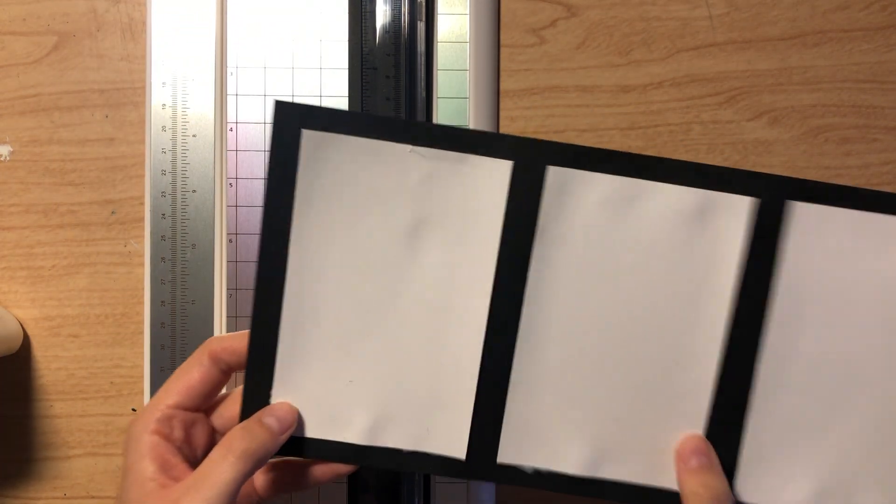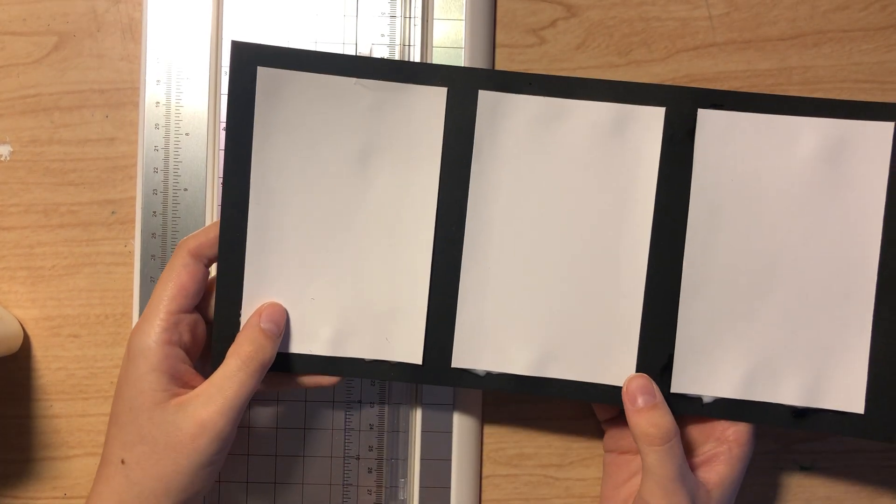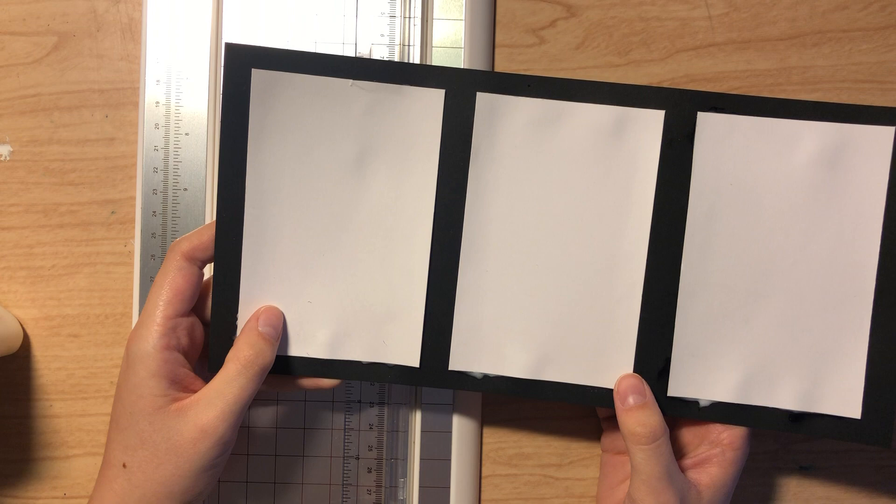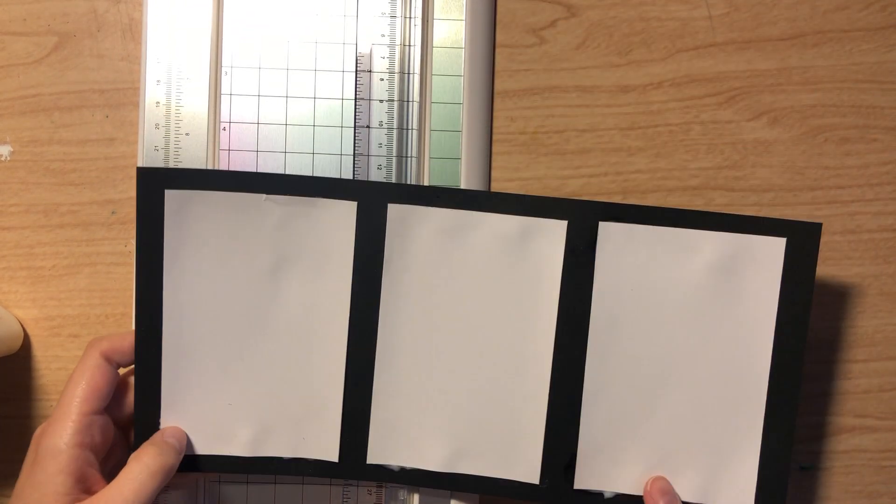But yeah, that is how you mat your artwork with black construction paper. And if you're doing it horizontally, you'll pretty much do the same thing, except you'll just have a little bit more space on one side of the bottom artwork.